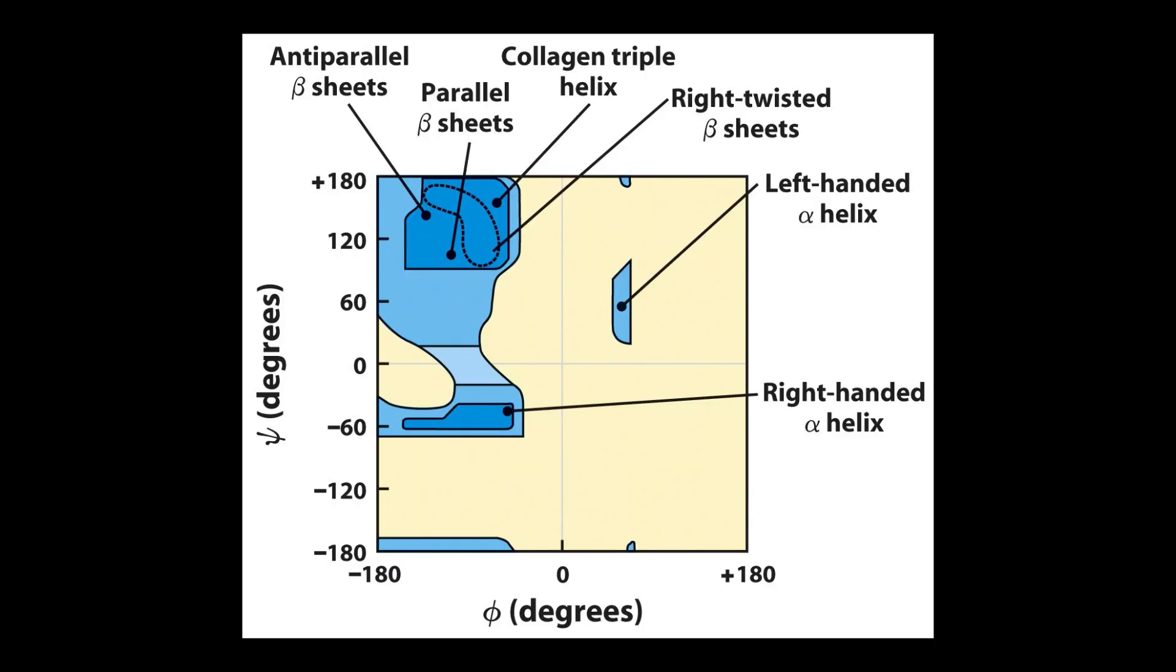For an amino acid in an alpha helix, both the Φ and ψ angles are negative. We can see this on our Ramachandran plot. And we'll notice that for the beta sheet, ψ is positive, as we can see from this region of the plot.